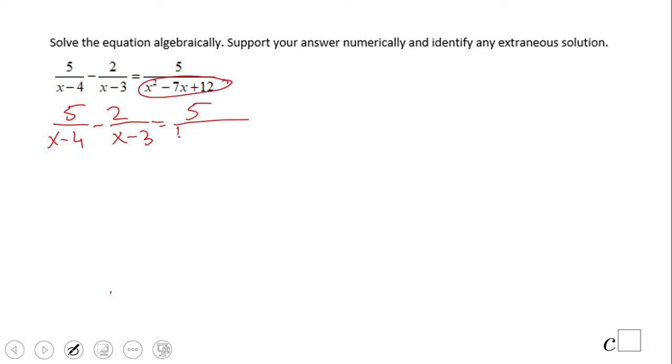This quadratic is x minus 4 times x minus 3. Right now we want to look for the least common multiple for these three denominators, the bottom of the fractions, and that will be x minus 4 times x minus 3.